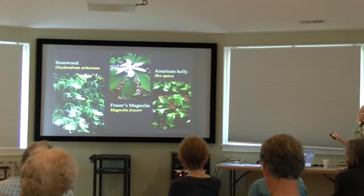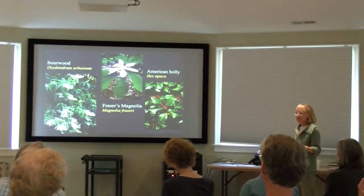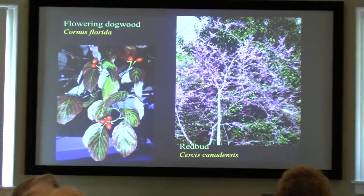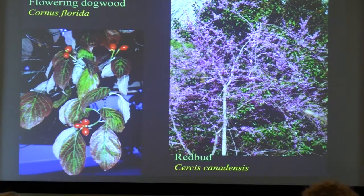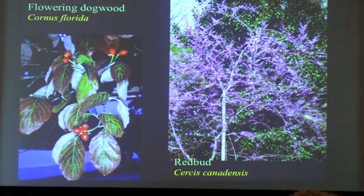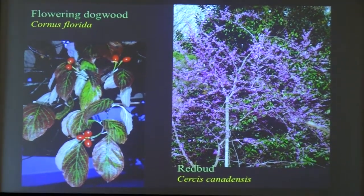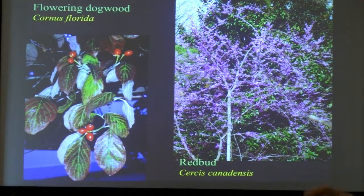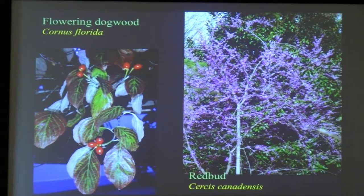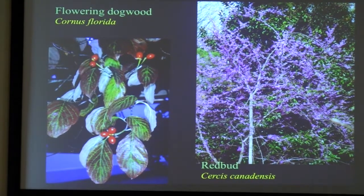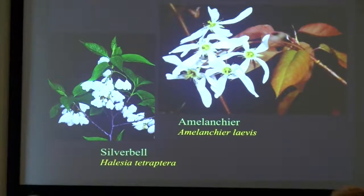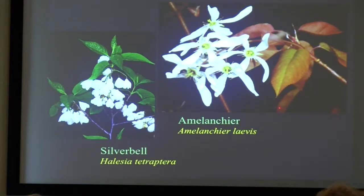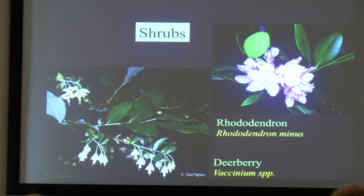Sourwoods, Fraser magnolia, American holly — all great native trees for different areas. Flowering dogwood and redbuds are understory trees; both are called small canopy trees and do really well. Redbuds will drive you nuts with reseeding, but that's what plants do. Other beautiful understory trees include amelanchiers — it's a wonderful tree — and silvberbells. We have a couple of different amelanchier species and I don't know why we don't see more of them.